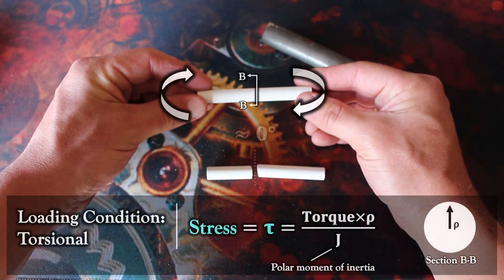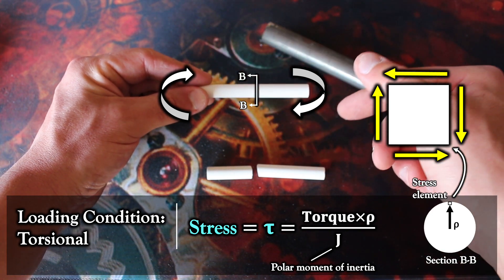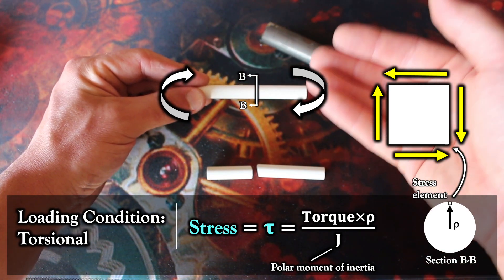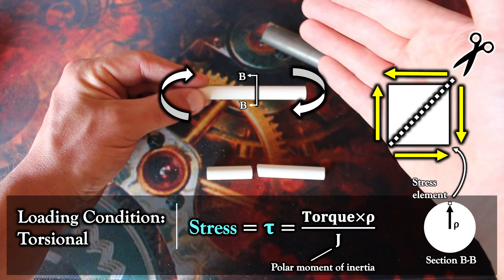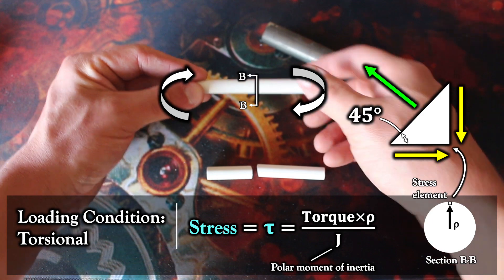Whereas if I apply a torsional load, which results in shear stress along the axes of symmetry, then I would expect the failure plane to be 45 degrees off of that shear stress plane, which is where the maximum normal stress would be.